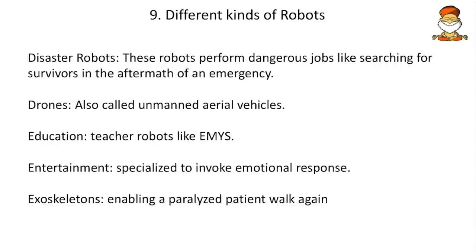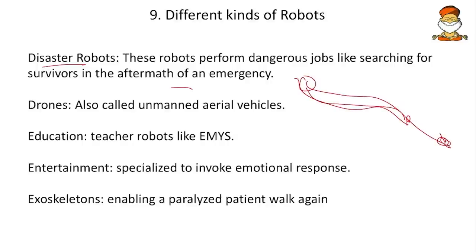Different kinds of robots: first are disaster robots, which perform dangerous jobs like searching for survivors in aftermath of emergencies. For example, a snake-shaped robot can enter earthquake debris, provide visual information about who is buried underneath and whether they are alive or dead.